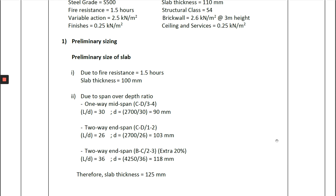On the preliminary sizing of the slab, I calculate based on two conditions. The first one is due to fire resistance — we refer to table 5.8. Based on our specification of 1.5 hours fire resistance, table 5.8 shows the minimum slab thickness HF is 100 mm. Next, we calculate based on the span-over-depth ratio by referring to table 7.4. I calculated three different sizes because we have different conditions of slab — either one-way or two-way, either end span or mid span.